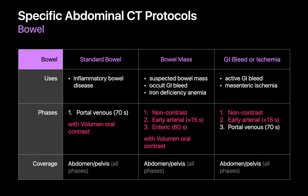Three specific abdominal CT protocols that target the bowel are the standard bowel protocol, bowel mass protocol, and GI bleed or ischemia protocol. A common indication for the standard bowel protocol is inflammatory bowel disease; it is a single enhanced abdominal pelvic CT scan during the portal venous phase after hyperosmolar negative oral contrast has been administered. The bowel mass protocol is used when a bowel mass is suspected, with indications also including occult GI bleed or iron deficiency anemia. Hyperosmolar negative oral contrast is also administered, but unlike the standard bowel protocol, several scans are performed: a non-contrast scan and two enhanced scans during the early arterial phase and enteric phase of enhancement.